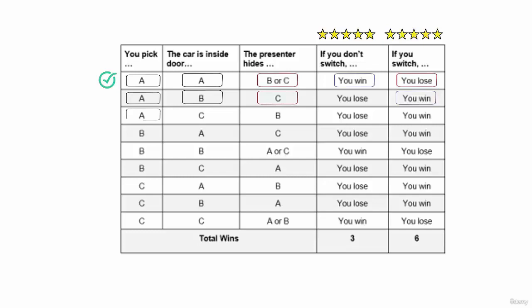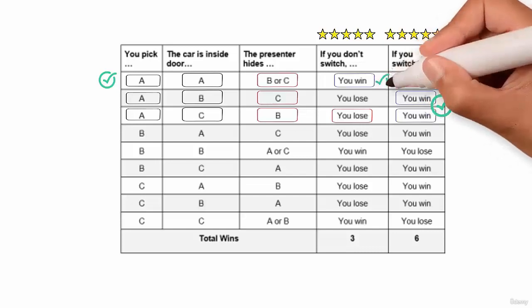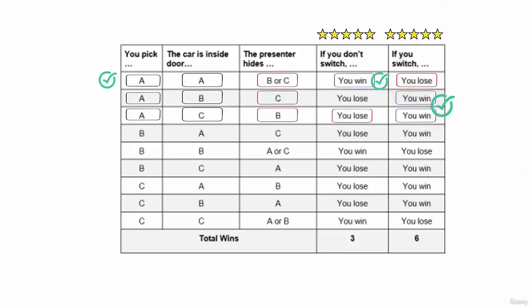The other option is picking door A and the car being inside door C. The presenter will hide door B because it has a goat. If you switch, you will win. And if you don't switch, you will lose. We have done all possibilities now for picking door A. And switching yields two victories, while not switching only offers one victory.